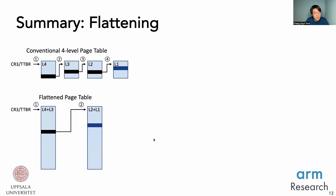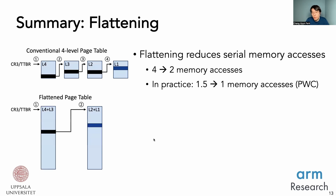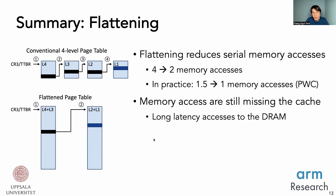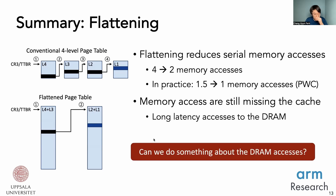To summarize flattening: it flattens the conventional four-level page table into fewer levels, reducing the number of memory accesses required to walk the page table. In practice, the flattening we have incurs one memory access thanks to the page walk cache. However, we found that this memory access still required a visit to DRAM, causing high latency. So can we do anything about the DRAM access?